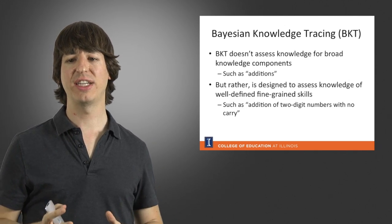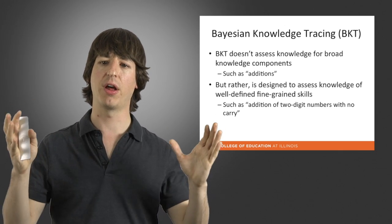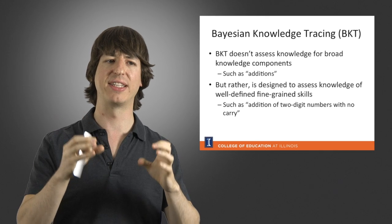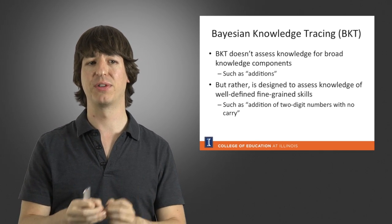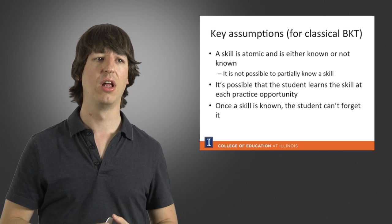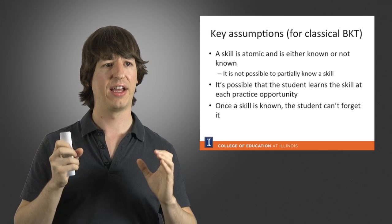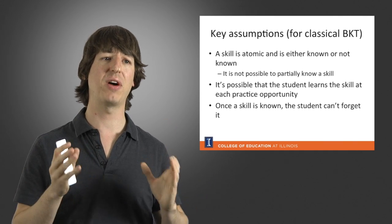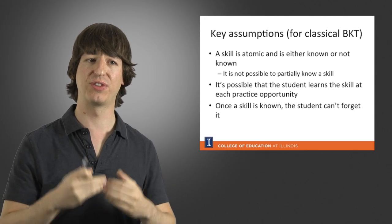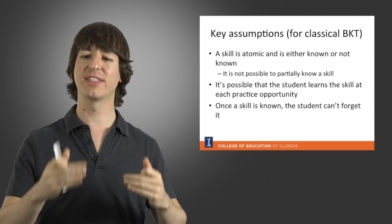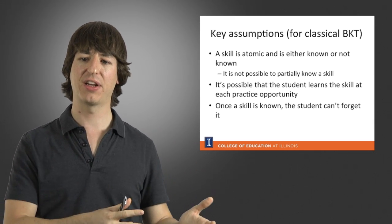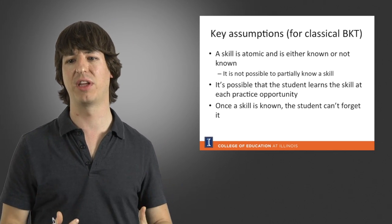In Bayesian knowledge tracing, the model is not designed to assess broad knowledge components such as addition. Rather, it's designed to assess knowledge of very well-defined, fine-grained skills — for example, the addition of two-digit numbers with no carry. Knowledge tracing makes a few strong assumptions: a skill is atomic and is either known or not known, so it's not possible to have a skill that is partially known. The student can learn the skill every time they have to apply it. And once the skill is known, in this model we assume there is no forgetting, even though students can in fact forget things in reality.